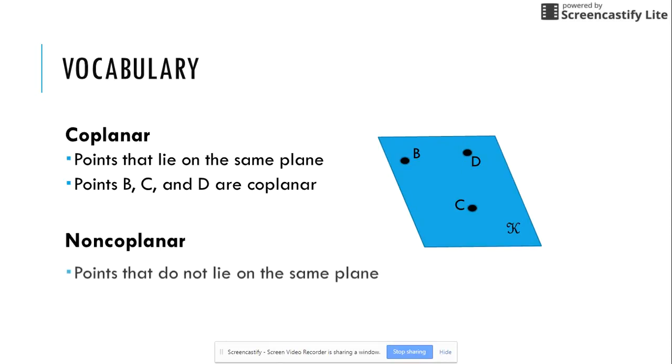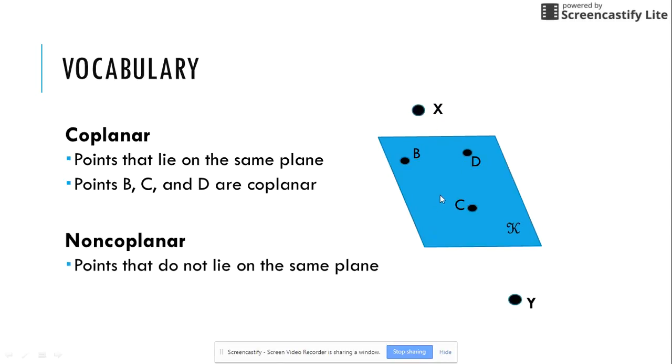Non-coplanar are points that do not lie on the same plane. So here we have added X and Y that are not on this blue plane. While they are on the computer screen, they are not on this blue plane here, so therefore they are not coplanar. D and B are coplanar, but X is not. So therefore they are non-coplanar because X is the rule breaker. C, Y, and X are not on the same plane at all, so they are non-coplanar.